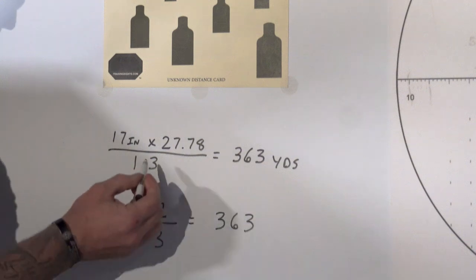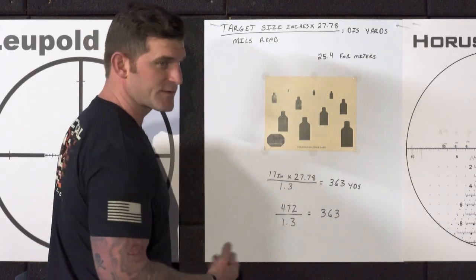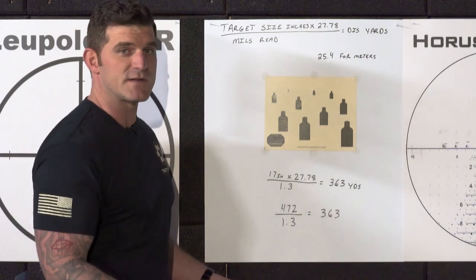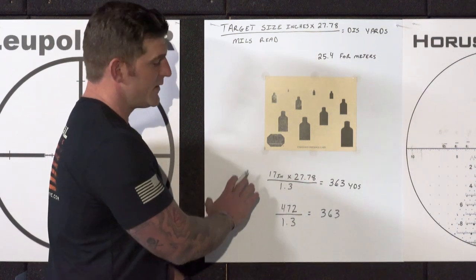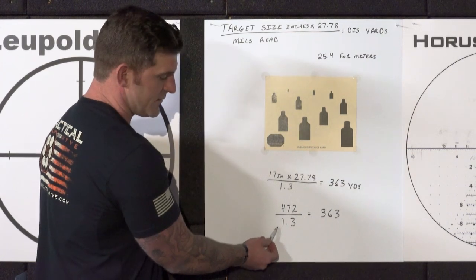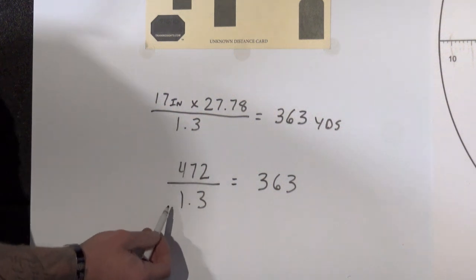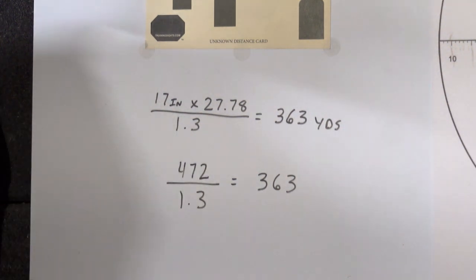Now the cool part about this top part of this equation, that 472 can be a constant. So if all the targets on your range are 17 inches wide, you no longer need to put 17 times 27.78. You can just use 472 divided by whatever your mills are read at that point. So 472 divided by 1.3 is going to give us 363 yards.